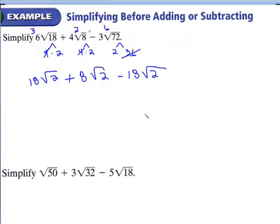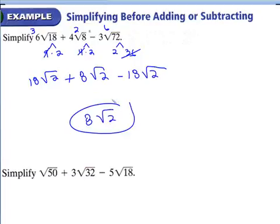I'm just showing it this way as a quicker method. Are these like radicals now? Yes — same radicand and same index, so they are both radical 2. Combining the numbers in front: 8 minus 18 gives you negative 10... we end up with 8 radical 2 as our final answer.